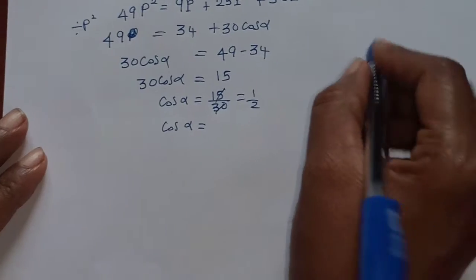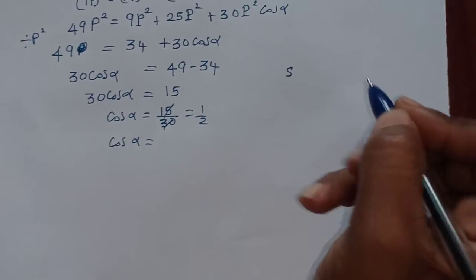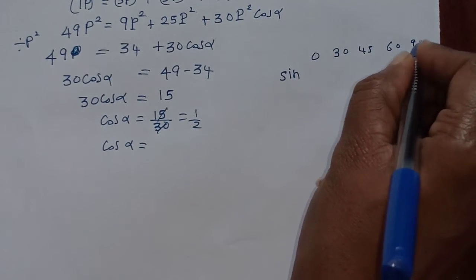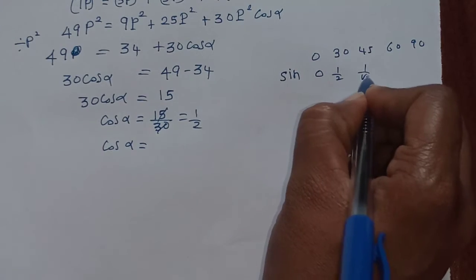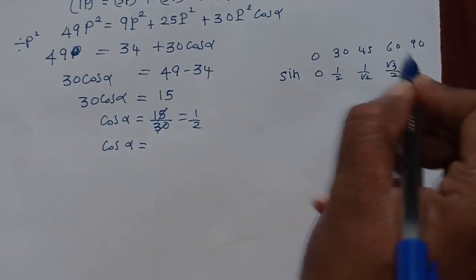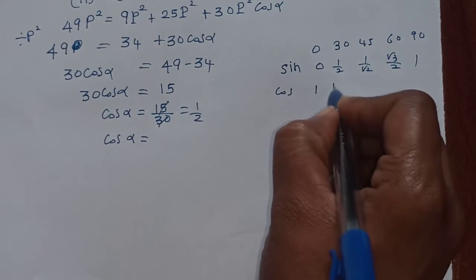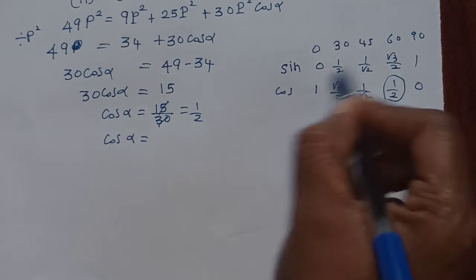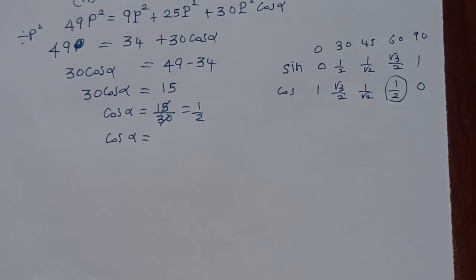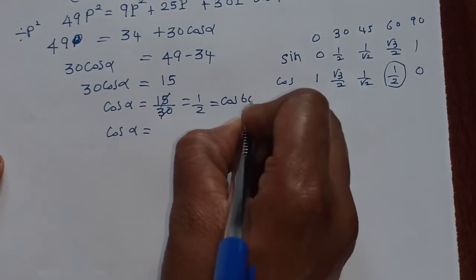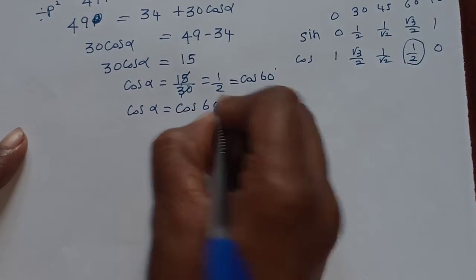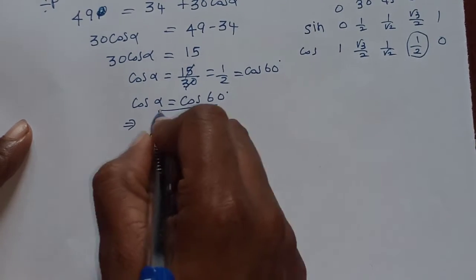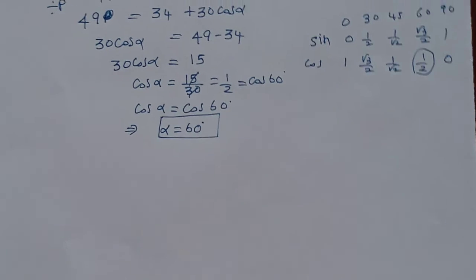Using trigonometric values — sin 0°, 30°, 45°, 60°, 90° — we look at the cosine row. Cos(60°) equals 1/2. Since cos(alpha) equals 1/2, alpha equals 60 degrees.